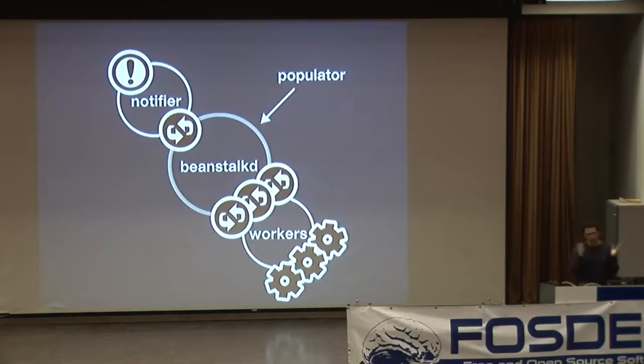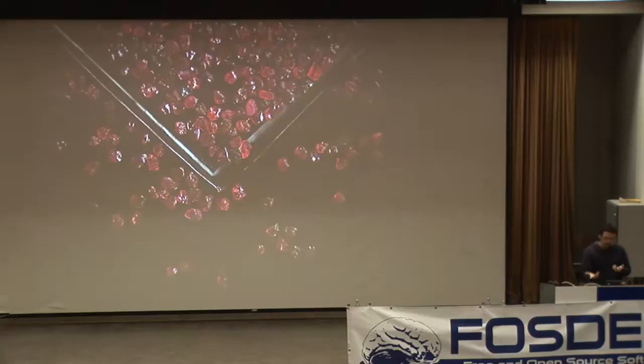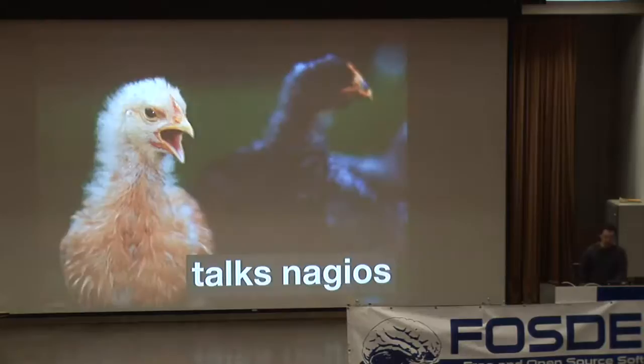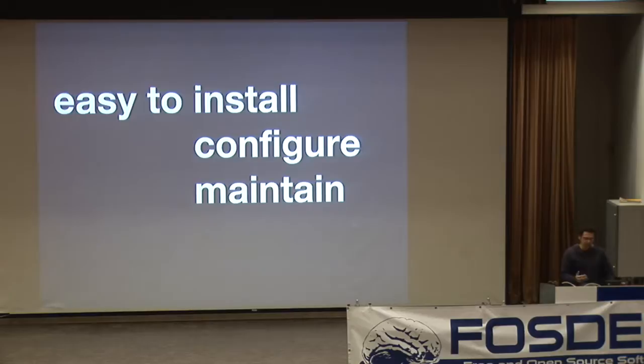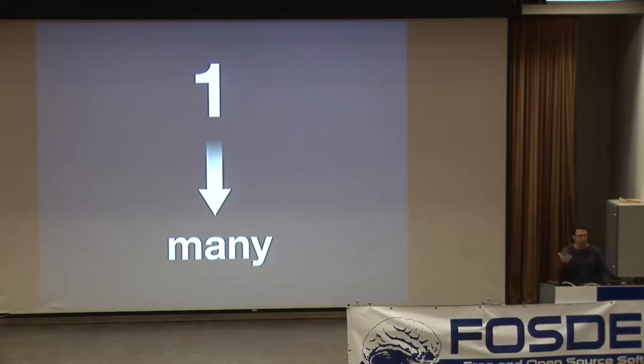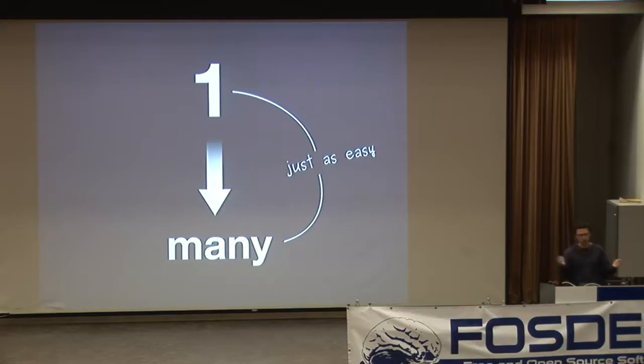The nice thing about that is we can start parallelizing the number of workers executing those checks — it doesn't just have to be a single worker, you can spin up as many as you want. Flapjack is written in Ruby, aims to be distributed and scalable, and talks the Nagios plugin format because there's not much point in reinventing the wheel. It should be just as easy to scale from one machine to many machines.